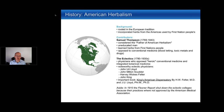Around 1780, a number of medical doctors formed an organization called the Eclectics. These were physicians opposed to conventional medicine's use of bloodletting, mercury, and toxic drugs. They incorporated herbal medicine into their practice, pursuing more gentle and supportive approaches. Important individuals included John Lloyd, Scooter Felter, and King, and they wrote key texts including King's American Dispensatory, authored by both doctors and pharmacists.